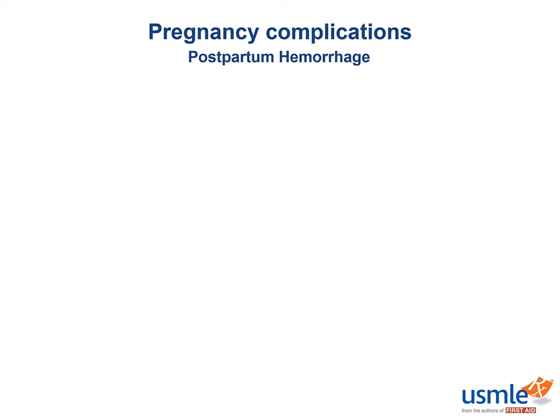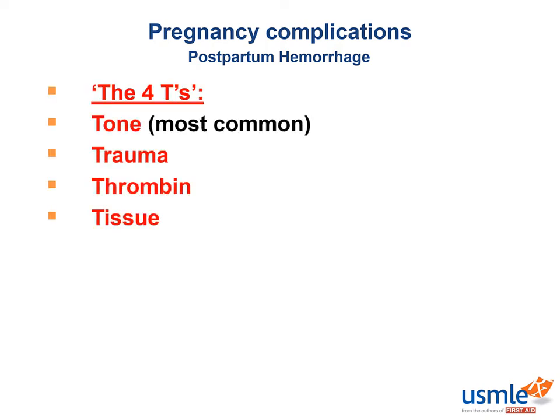For postpartum hemorrhage on the boards, remember the mnemonic of the four T's: Tone — as in lack of uterine tone, called uterine atony, which may be the most common cause; Trauma — such as lacerations or incisions from prior surgeries; Thrombin — as in some type of bleeding disorder; and Tissue — which would refer to placenta accreta or retained placental tissue, for example.